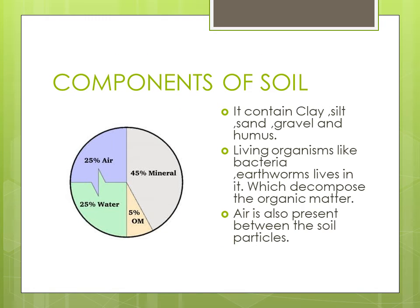Here you can see the components of the soil. Soil has 45% minerals, including clay, silt, sand, gravel, and humus. It contains 5% other organic matter, 25% water, and 25% air. Living organisms like earthworms and bacteria also live in it, which decompose the organic matter and increase its fertility. Air is present between the particles of the soil.